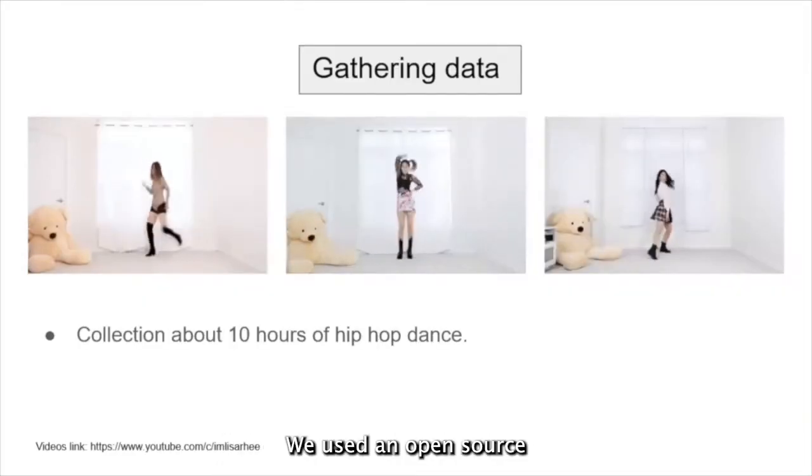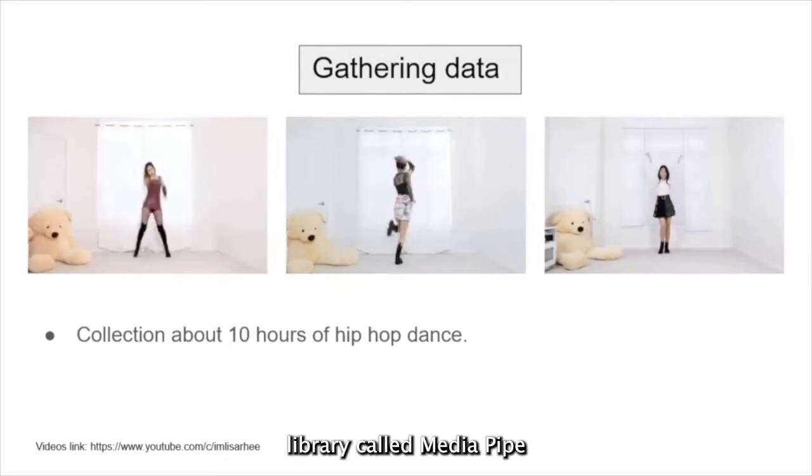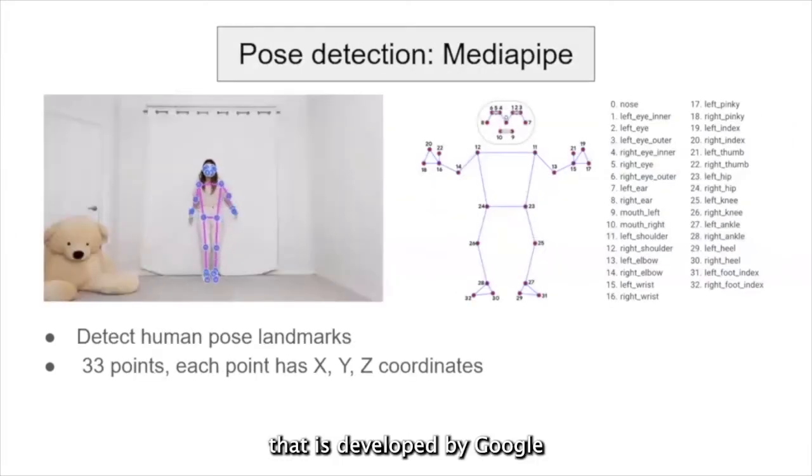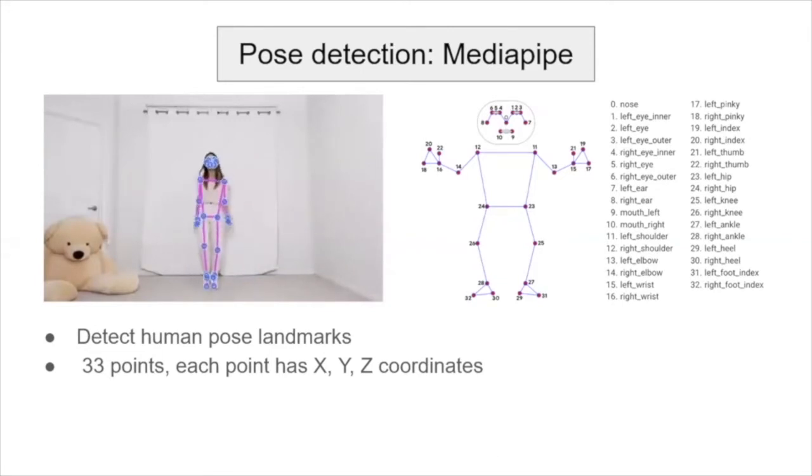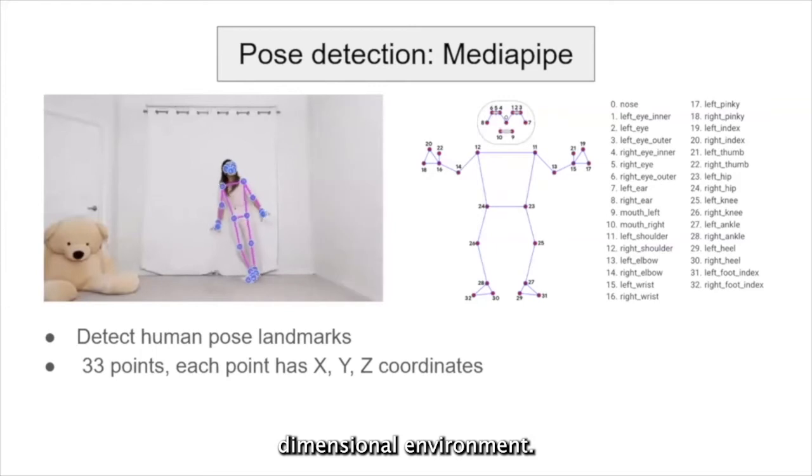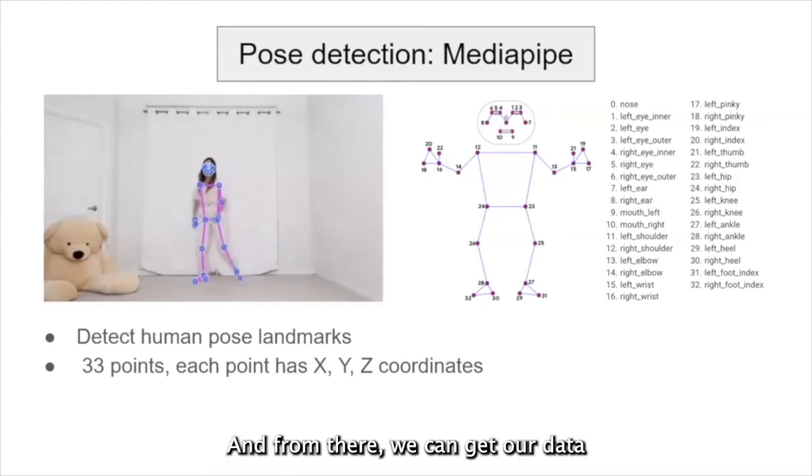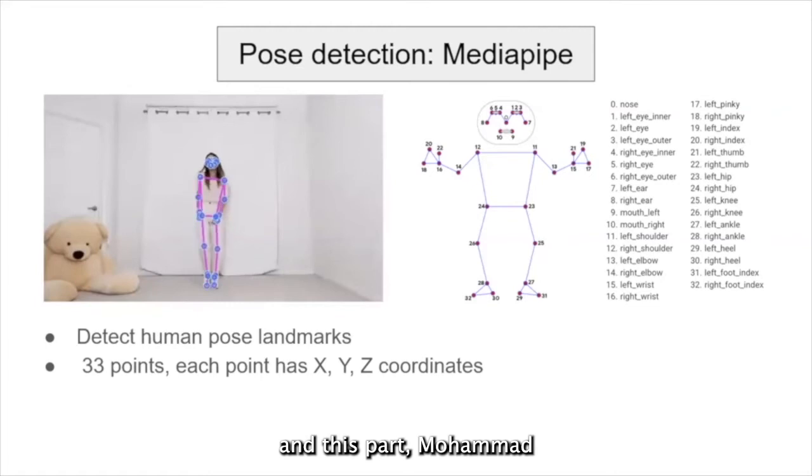And to do so, we used an open source library called MediaPipe that is developed by Google. In this library, providing the human parts into 33 movement points. And this point, each point is a coordinate x, y, z, since it is a three-dimensional environment. And from there, we can get our data. And this part, Mohamed will explain further.